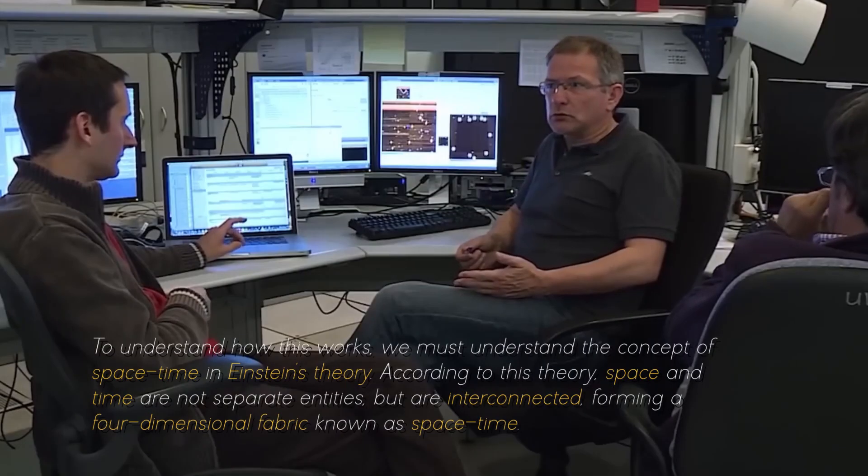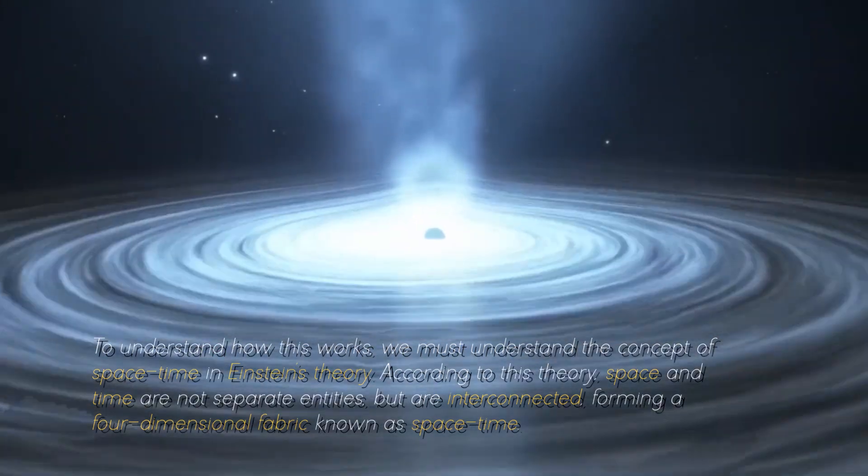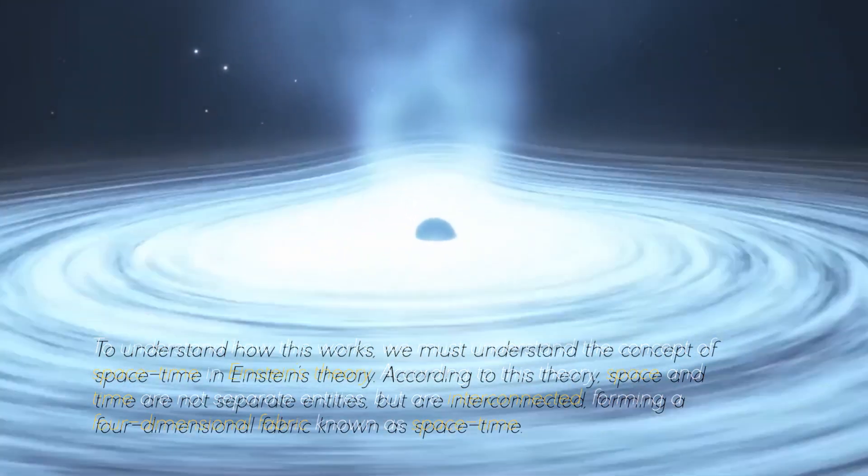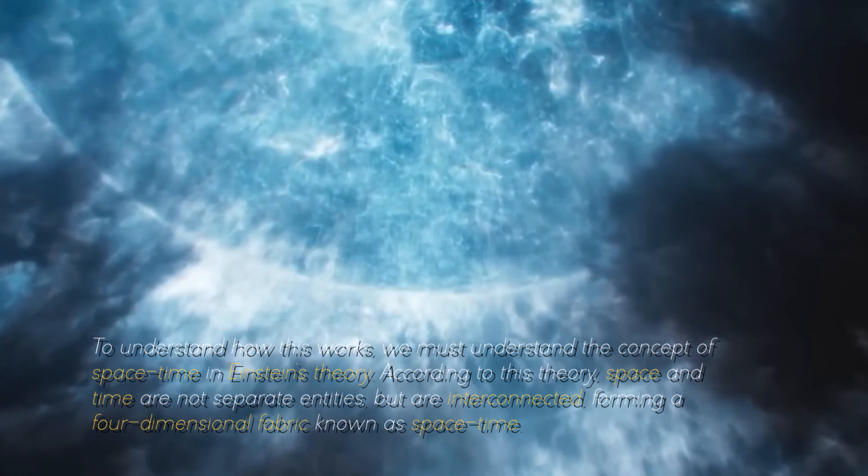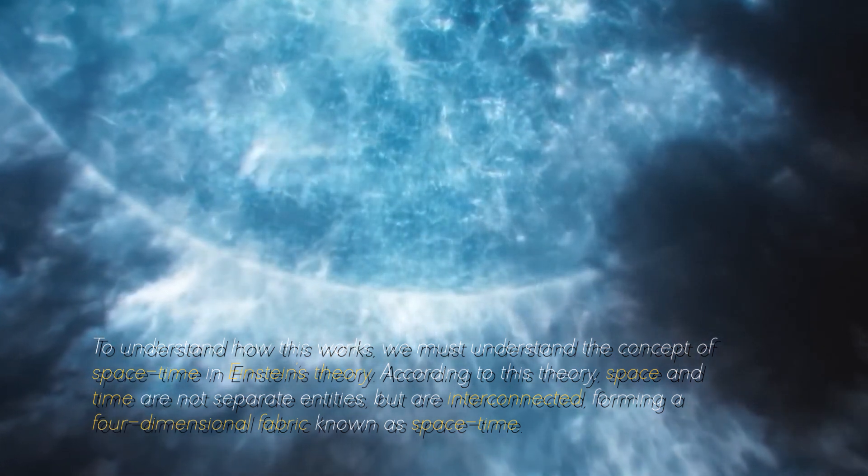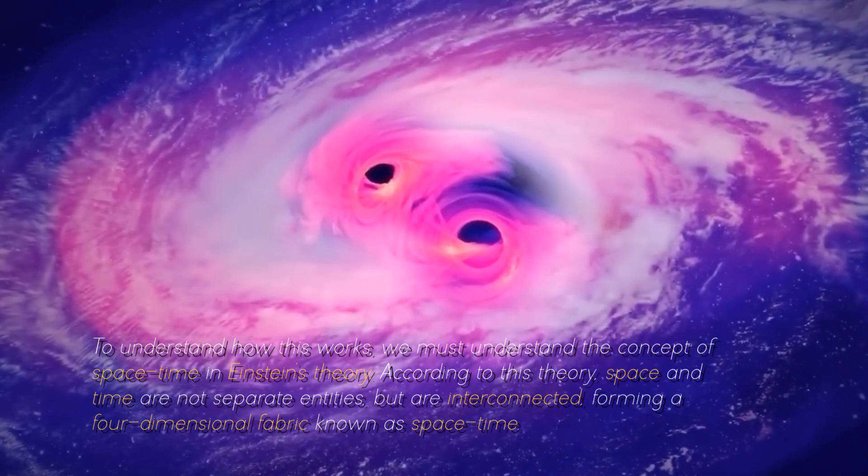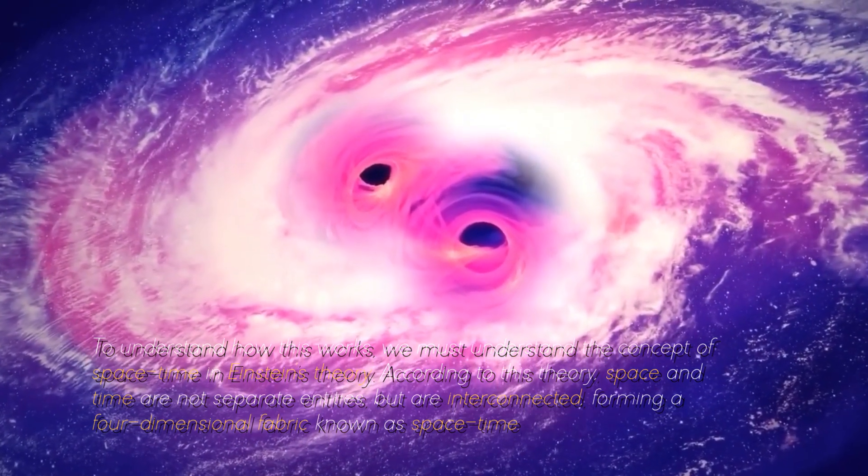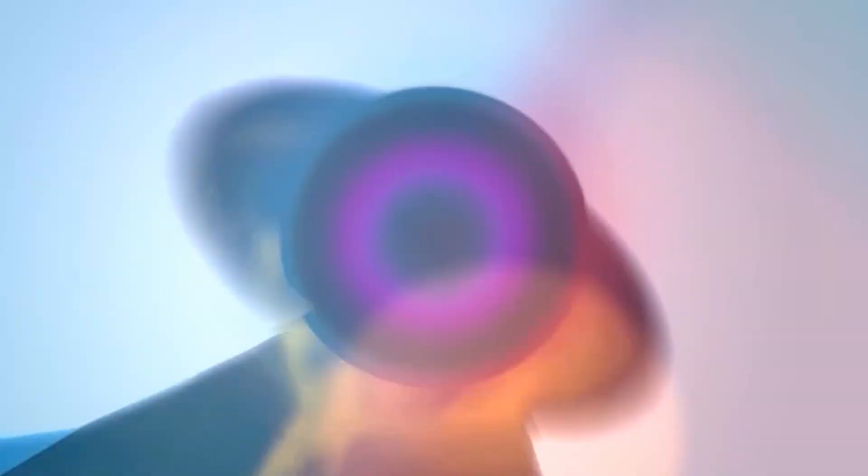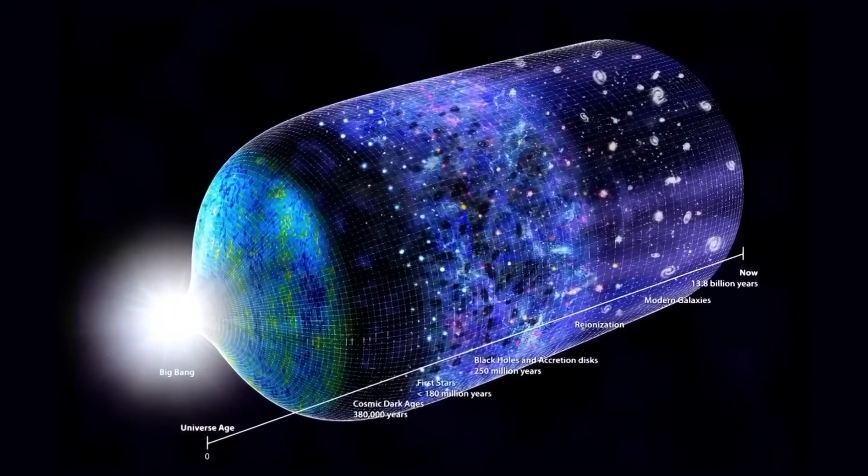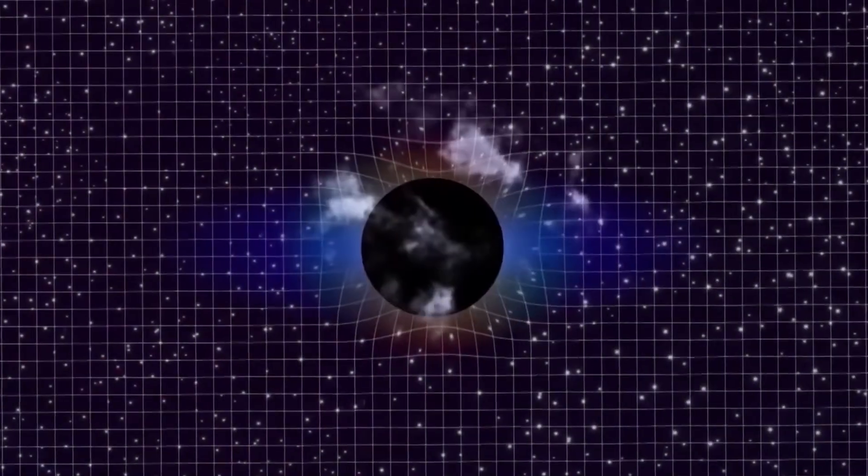To understand how this works, we must understand the concept of space-time in Einstein's theory. According to this theory, space and time are not separate entities, but are connected, forming a four-dimensional fabric known as space-time. Objects with mass warp space-time, creating a gravitational field that affects the motion of other objects.